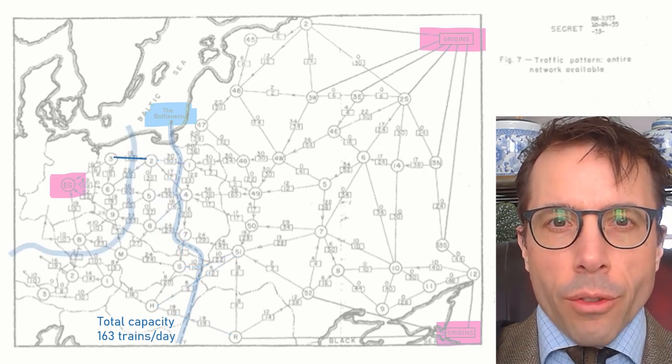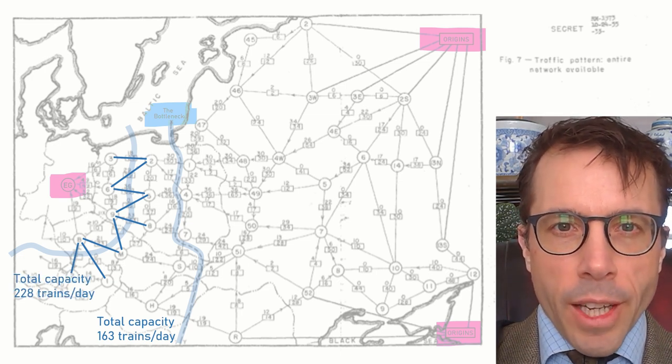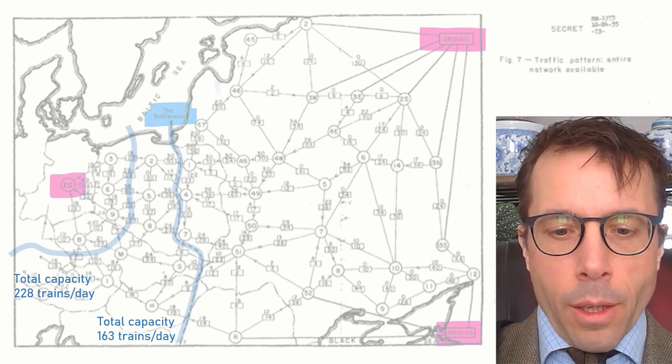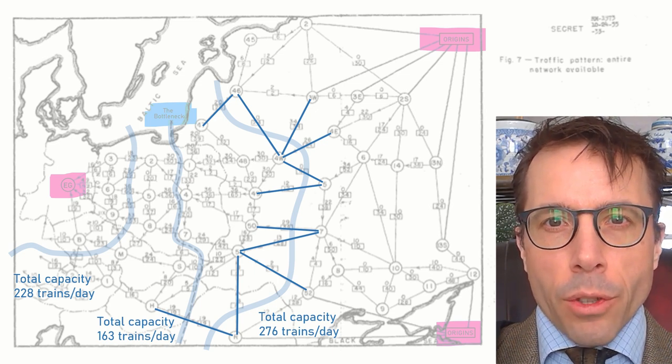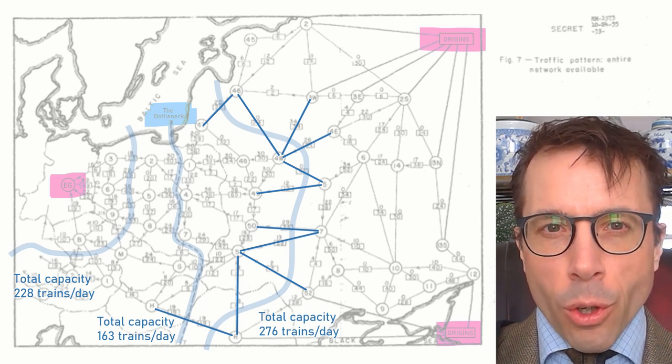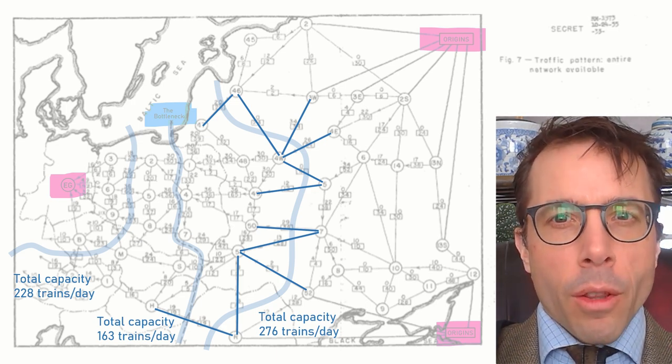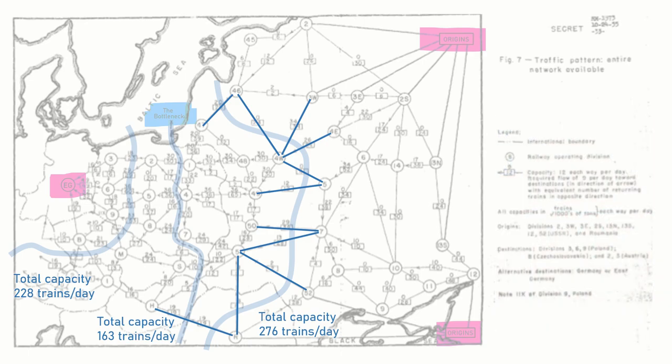We could do the same exercise for any line that separates East Germany from the refineries in the east. If we drew our separating line here further west we get an upper bound of 228 train loads per day, and this separating line here further east gives us an upper bound of 276 train loads per day. The RAND Corporation considered all possible separating lines, and the one that gave them the lowest upper bound was this one in the middle, which is why they call it the bottleneck. This idea of a separating line that divides the source from the sink is the big idea in this video. Let's spell it out formally.